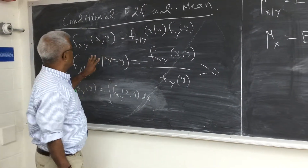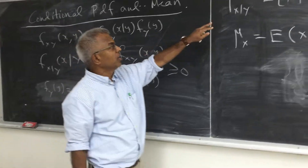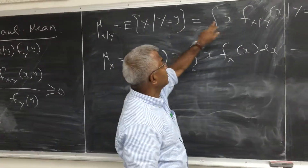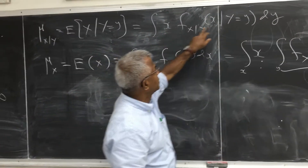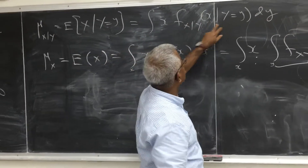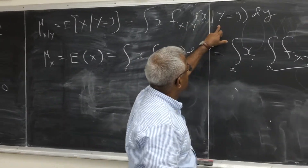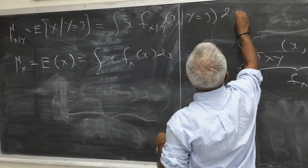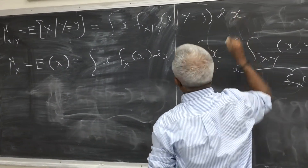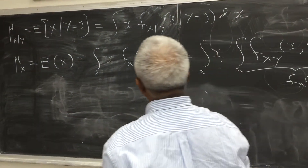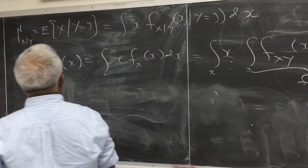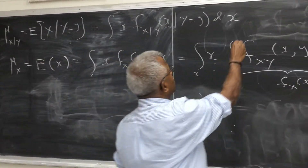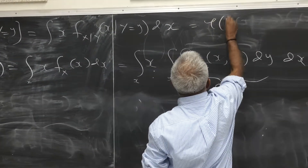The conditional mean uses this density function. The conditional mean of X given Y equal to y is X multiplied by the conditional density function, integrated with respect to X. In general, this will turn out to be a function of Y.